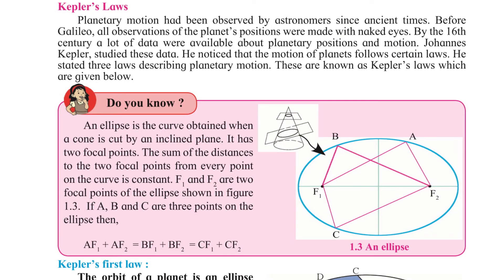Now, what is Kepler's law? Planetary motion had been observed by astronomers since ancient times. Before Galileo, all observations of the planet's positions were made with naked eyes. By the 16th century, a lot of data were available about planetary positions and motion. These are known as Kepler's laws, which are given below.